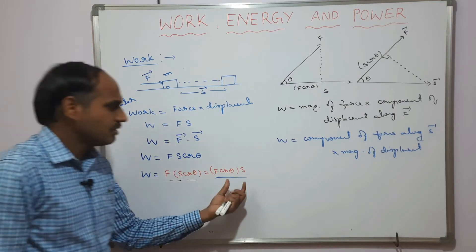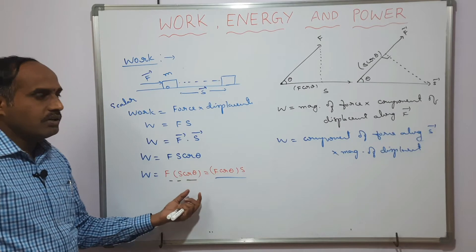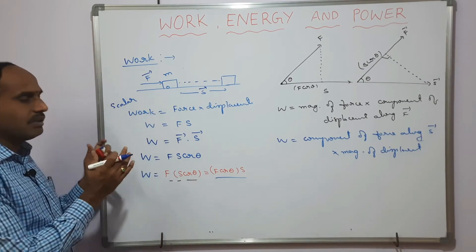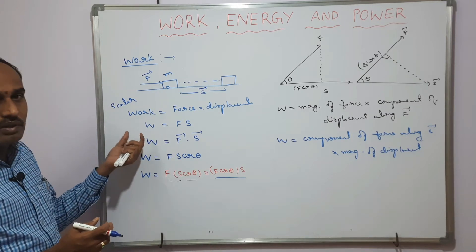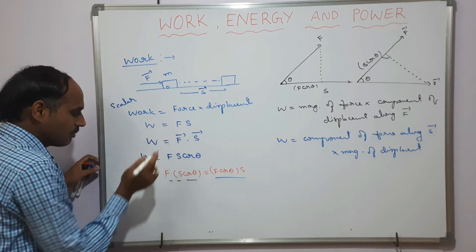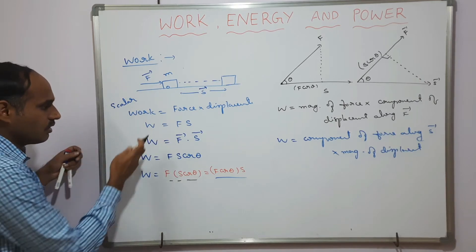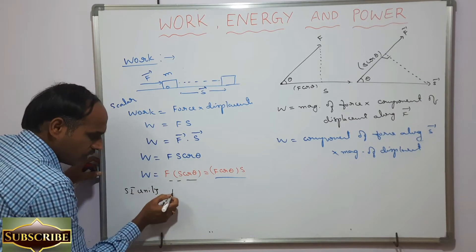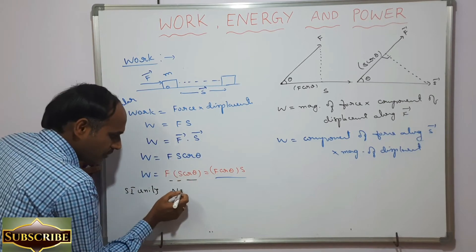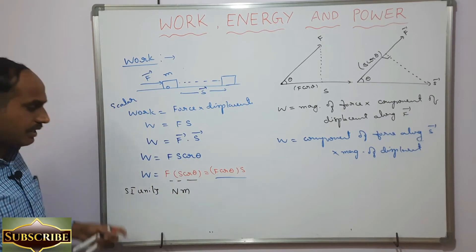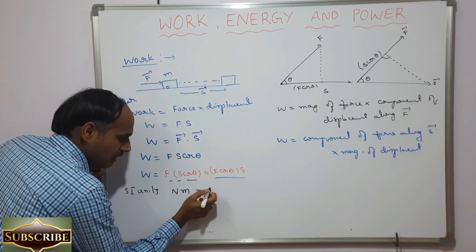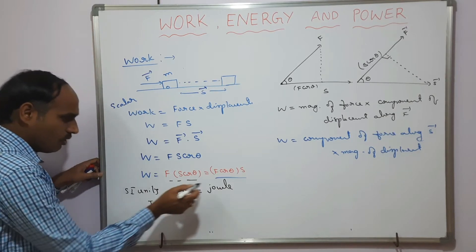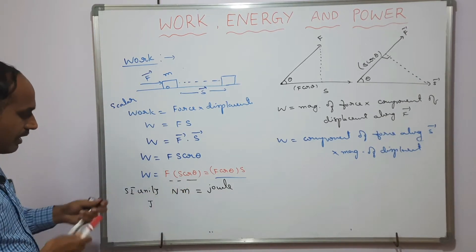This application was also discussed in the vectors chapter. Coming to W = Fs, work done is a scalar quantity. For SI units, force is in newtons and displacement in meters, so the unit of work done is newton-meter, which is standardly called the joule. One joule equals one newton-meter.